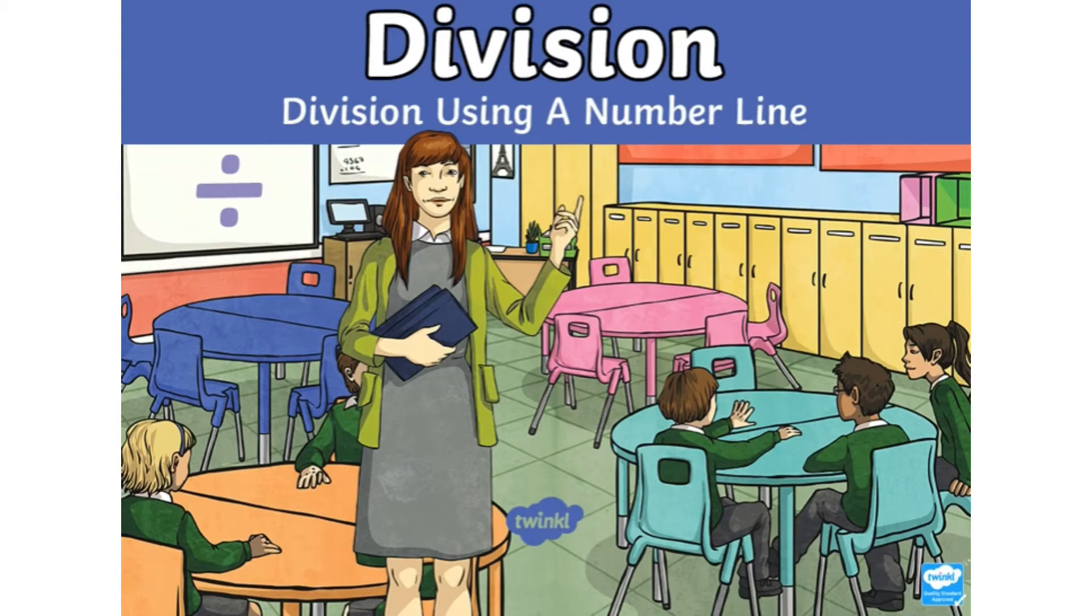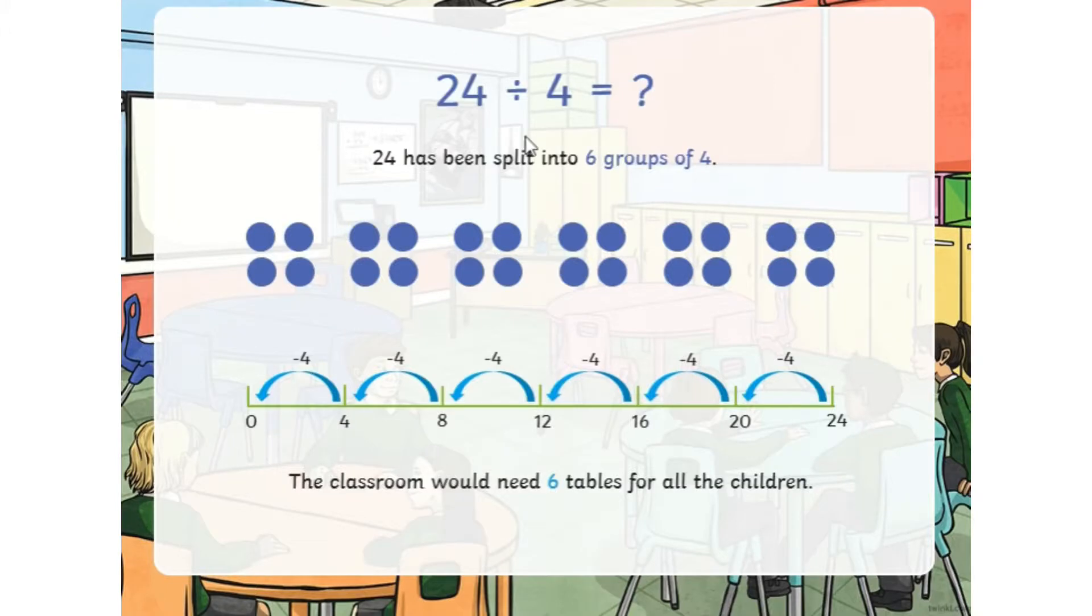This PowerPoint shows an example where a teacher is putting 24 pupils into tables or groups of four. The calculation is written as 24 divided by 4. This is asking how many groups of four or tables of four are in 24.